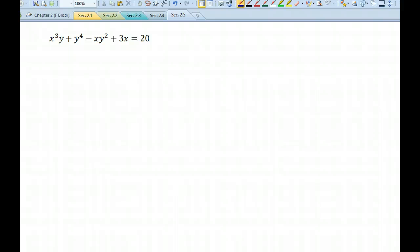x cubed y plus y to the fourth minus xy squared plus 3x equals 20. Notice that this x cubed y is a product, and this xy squared is also a product, so we're going to have to do the product rule in those terms. Here we go.